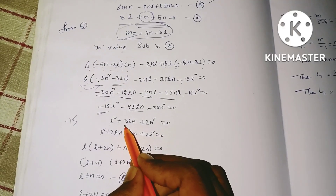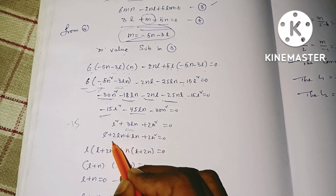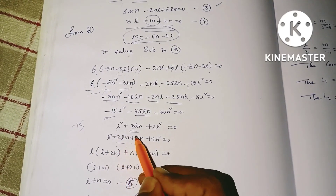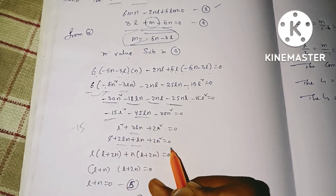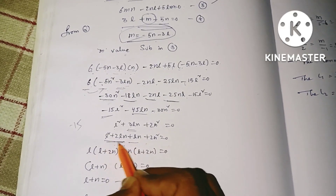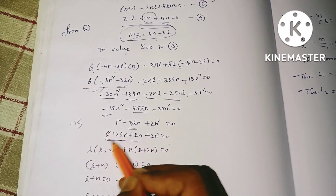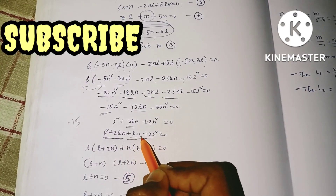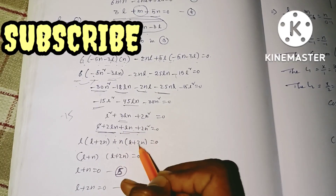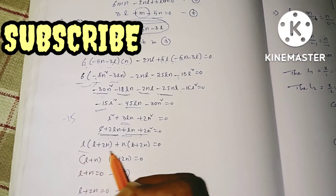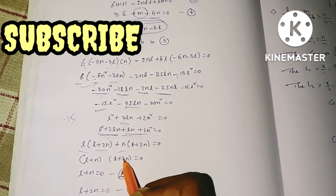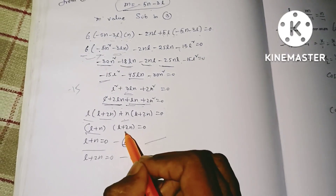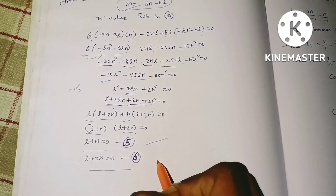So we have to write the factorization. 3LN equals 2LN plus LN. So L² + 2LN + LN + 2N² = 0, which factors as (L + N)(L + 2N) = 0. So L + N = 0. This is equation 6.